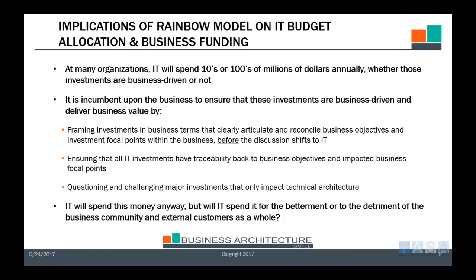So let's move on to looking at the implications of the rainbow model on IT budget allocation and business funding. At many organizations, IT will spend tens or hundreds of millions of dollars annually on investments that are not business driven. It is incumbent upon the business to ensure that these investments are business driven and deliver business value. If you're in the IT organization, that puts you in a bind — the business has not provided any degree of articulation of its business architecture in some organizations, leaving you nothing upon which to base a business perspective, other than a bottom-up, highly siloed set of typically non-rigorous approaches.